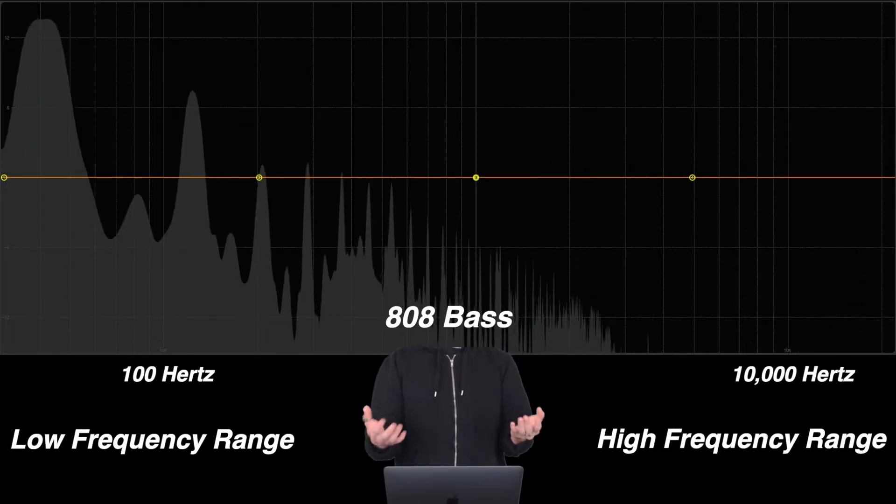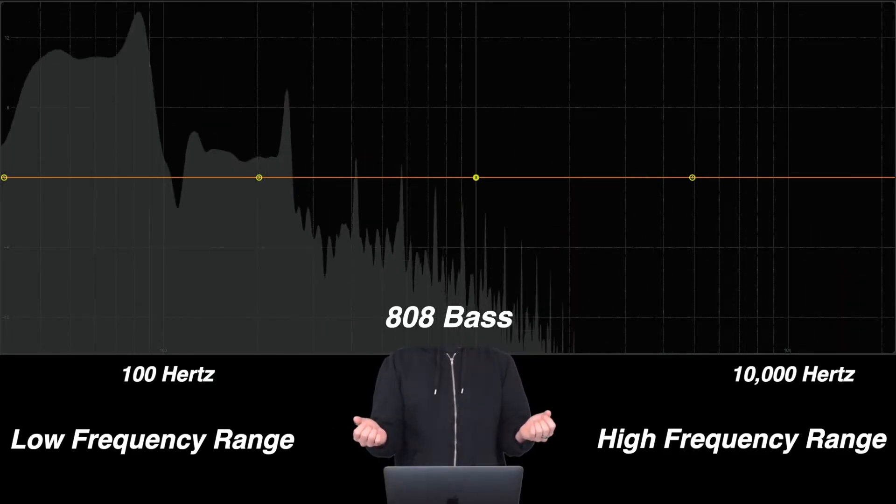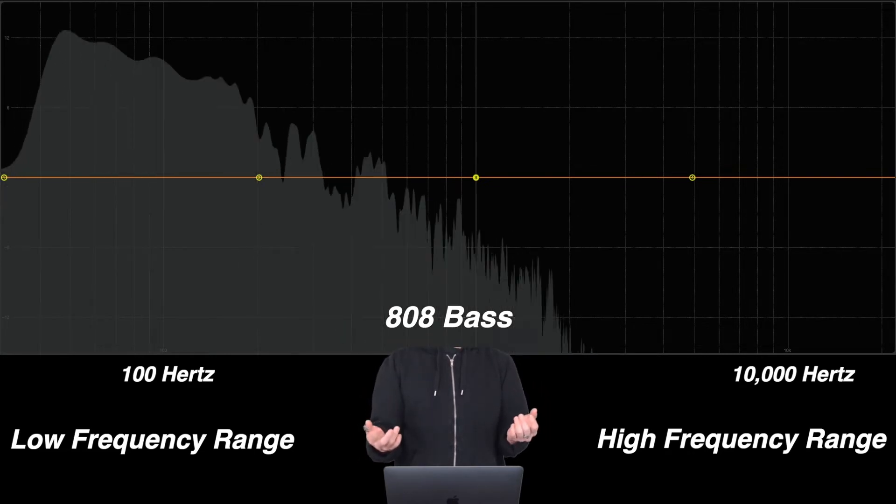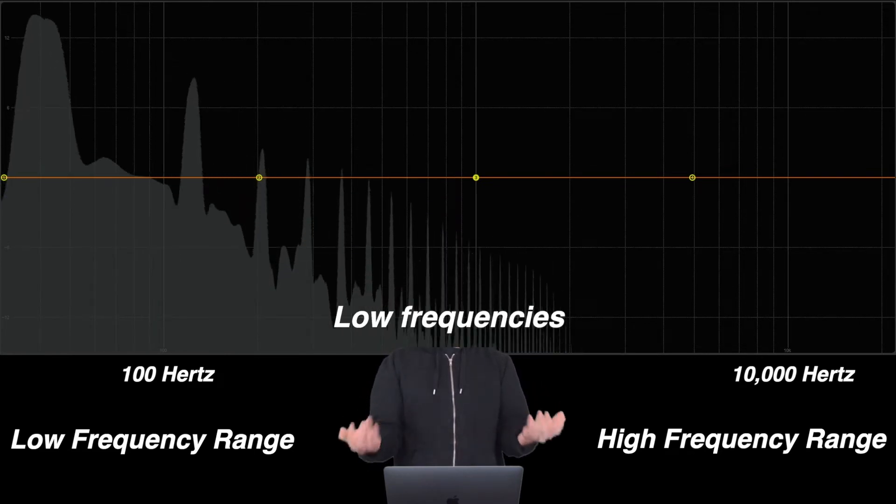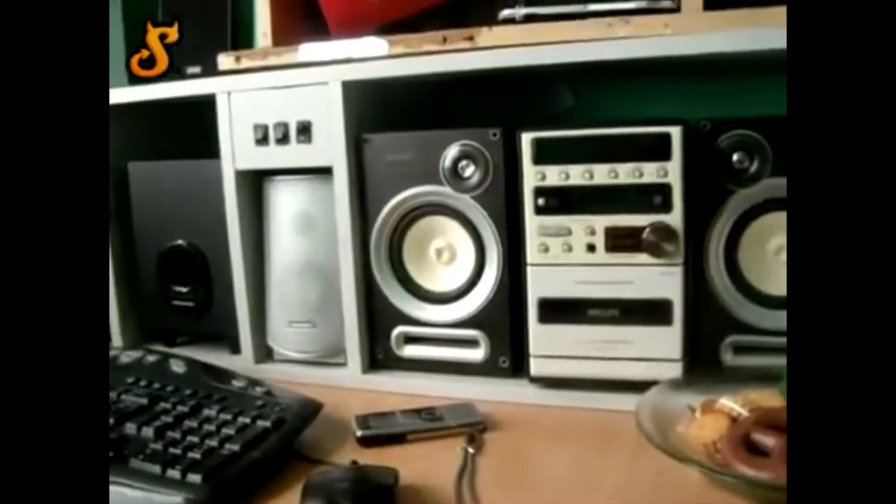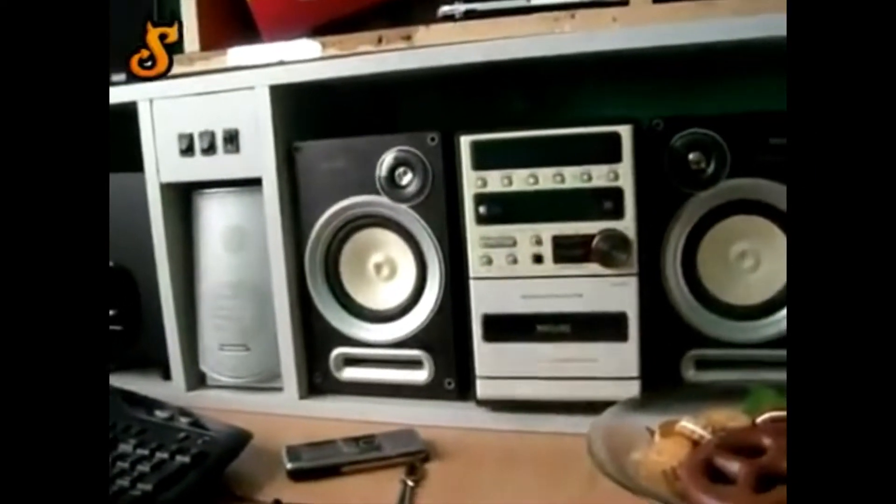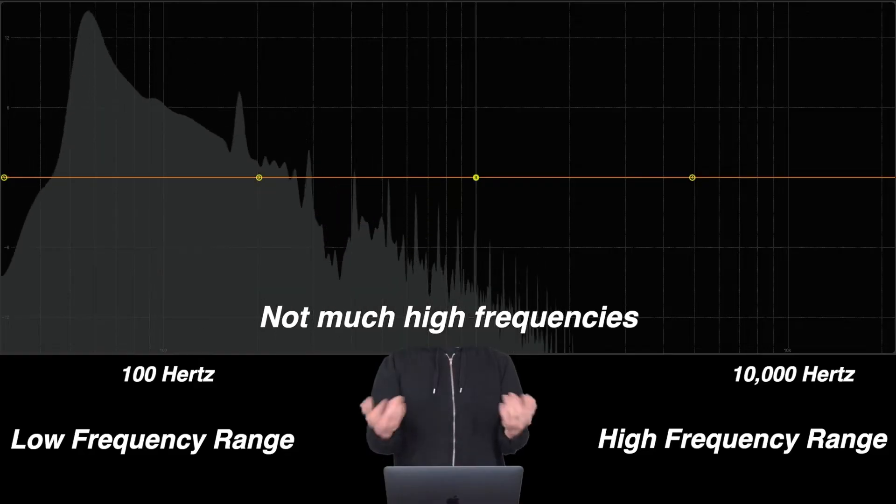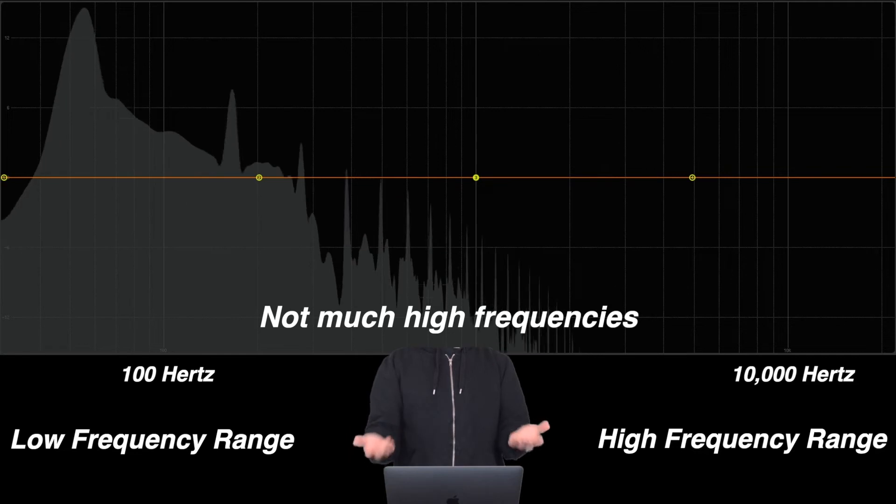This is the frequency spectrum of an 808 sound, which is that super low bass sound that we hear in trap music. So, most of the prominent frequency contents are in the lower frequency. These are the frequencies that we hear out of subwoofer that can rattle our whole room.